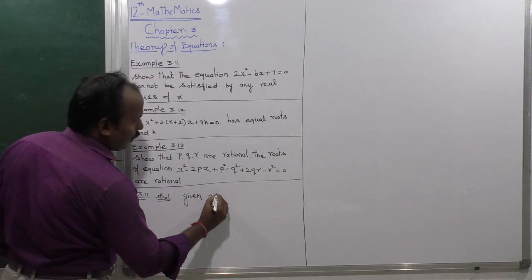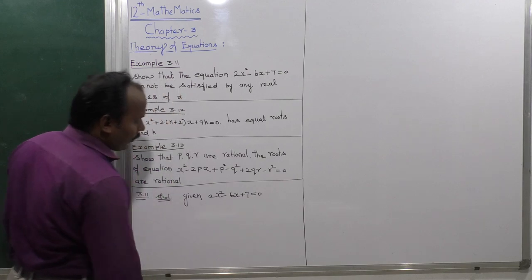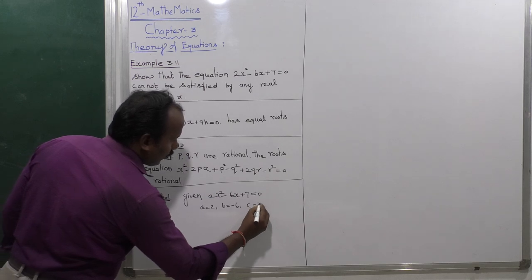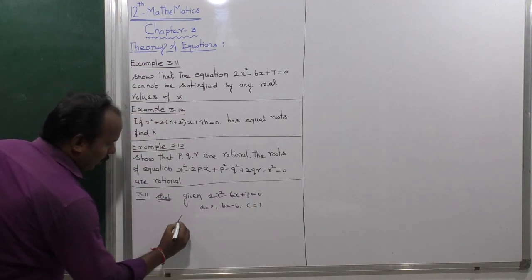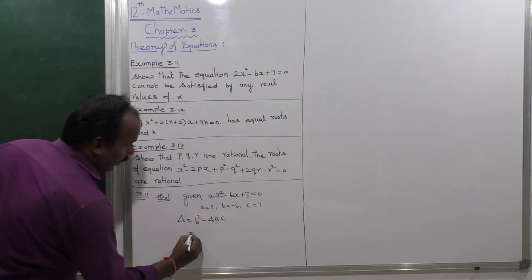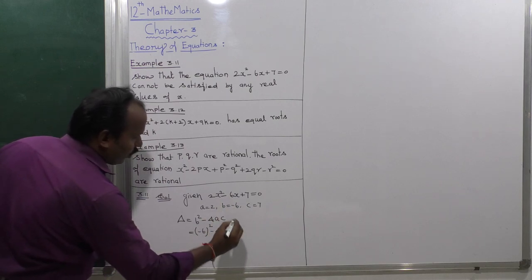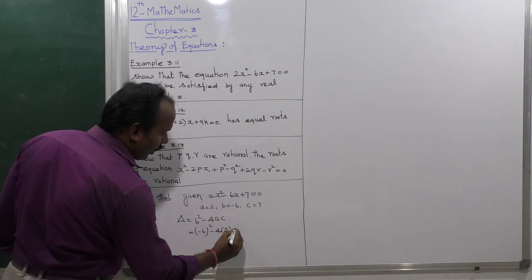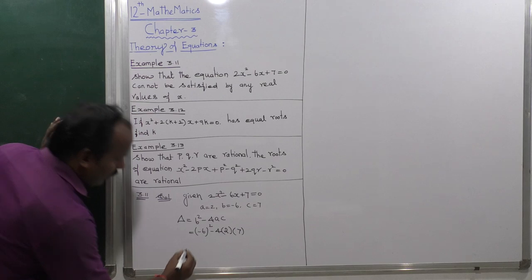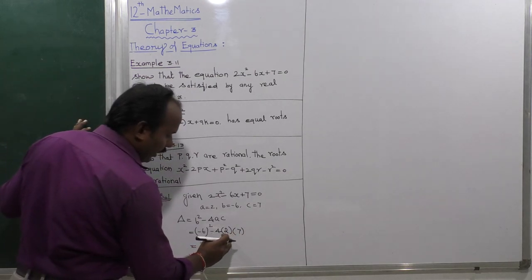The given equation is 2x squared minus 6x plus 7 equals 0. So a is equal to 2, b is equal to minus 6, and c is equal to 7. Applying the discriminant formula: delta equals b squared minus 4ac, which equals minus 6 the whole square, minus 4 into 2.